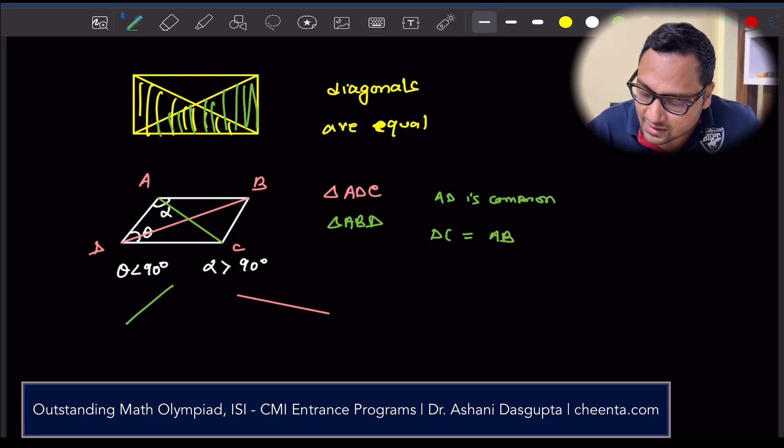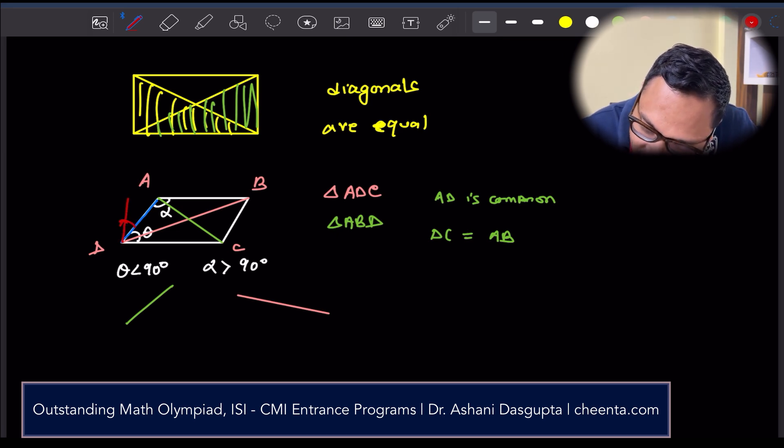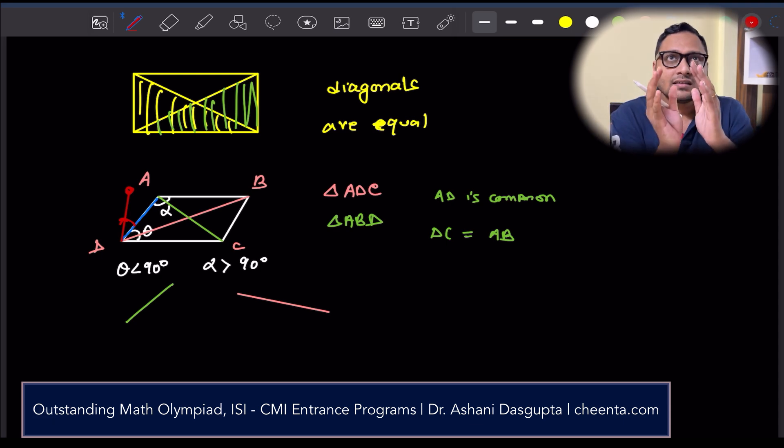They're almost the same. Only difference is this angle. What if I just rotate DA? Since angle theta is smaller than alpha, I will rotate DA, slightly enlarge the angle, so that this total angle is now alpha. I will rotate it a little bit, so that it's now alpha, the total angle is alpha.